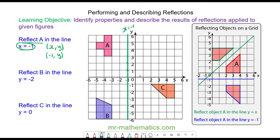When I reflect object A to the mirror line x is equal to negative 1, each vertex will be the same distance away from the line but on the other side. So the vertex here at negative 3 and 6 will be reflected to 1 and 6, because they are both two units away from the mirror line.